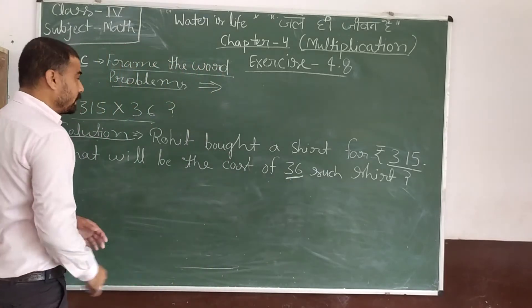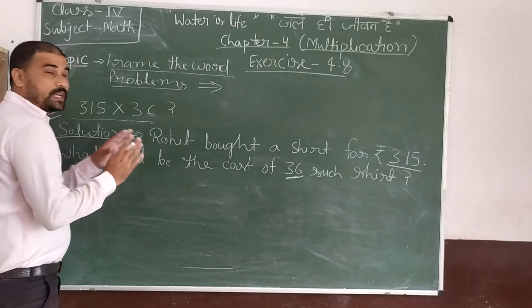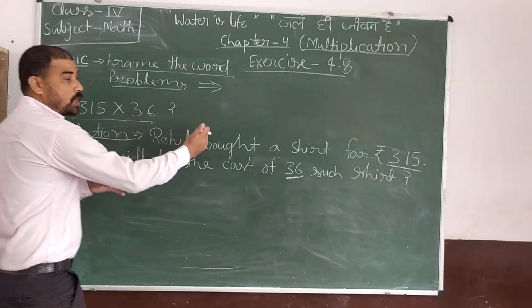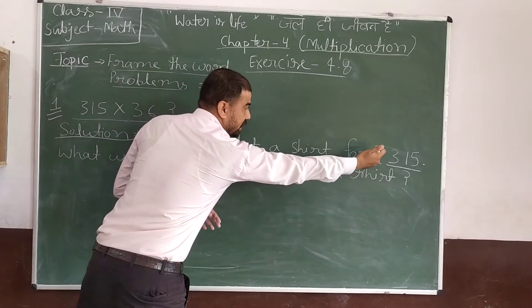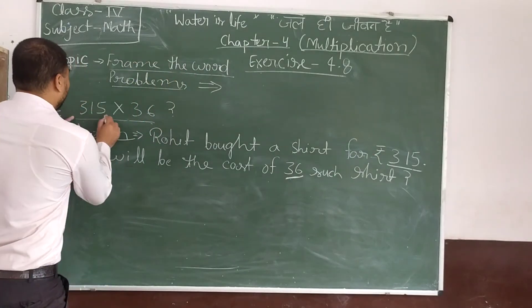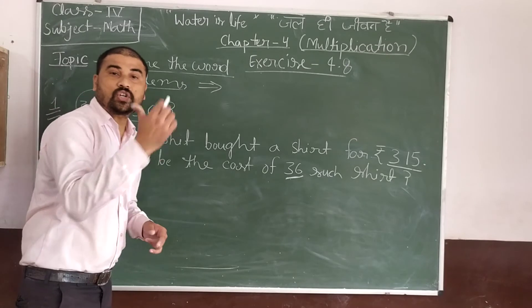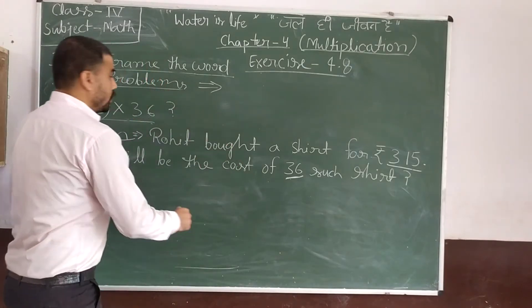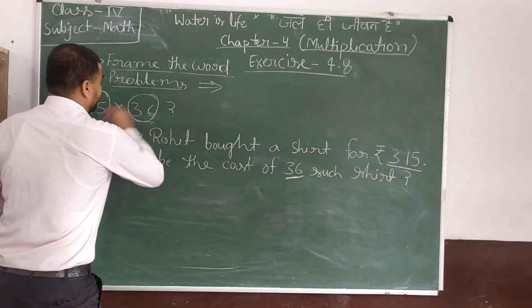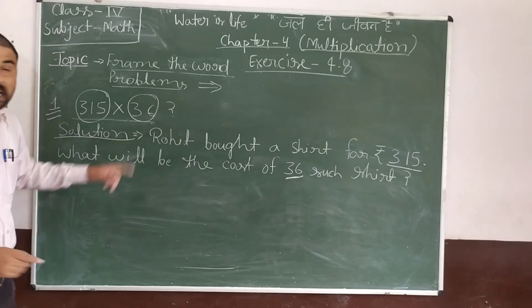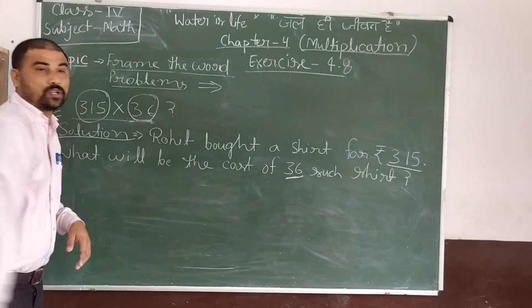So it is very easy. One more time look at here. Rohit bought a shirt for rupees 315. What will be the cost of 36 shirts? So I put this number to the cost of shirts. And for this number we have to find the 36 shirts cost.